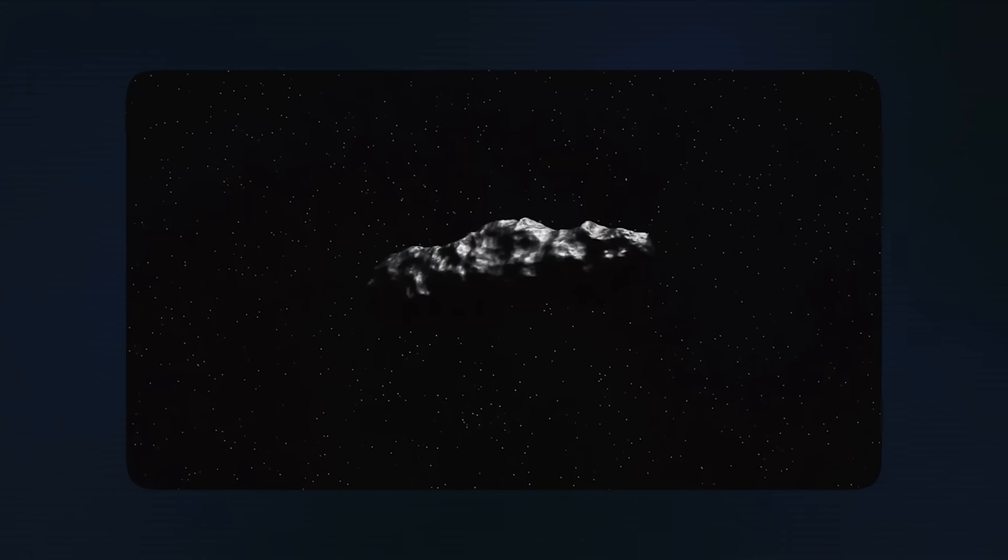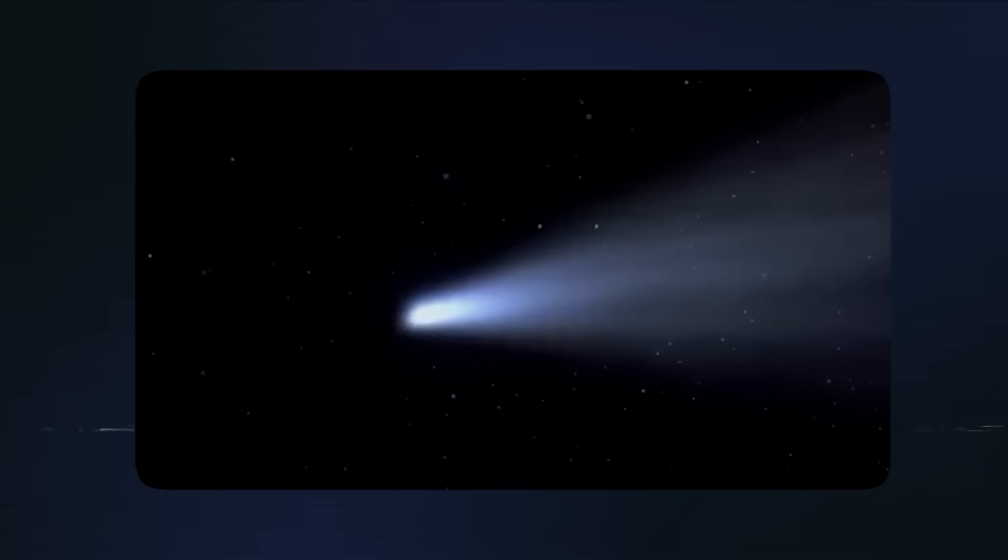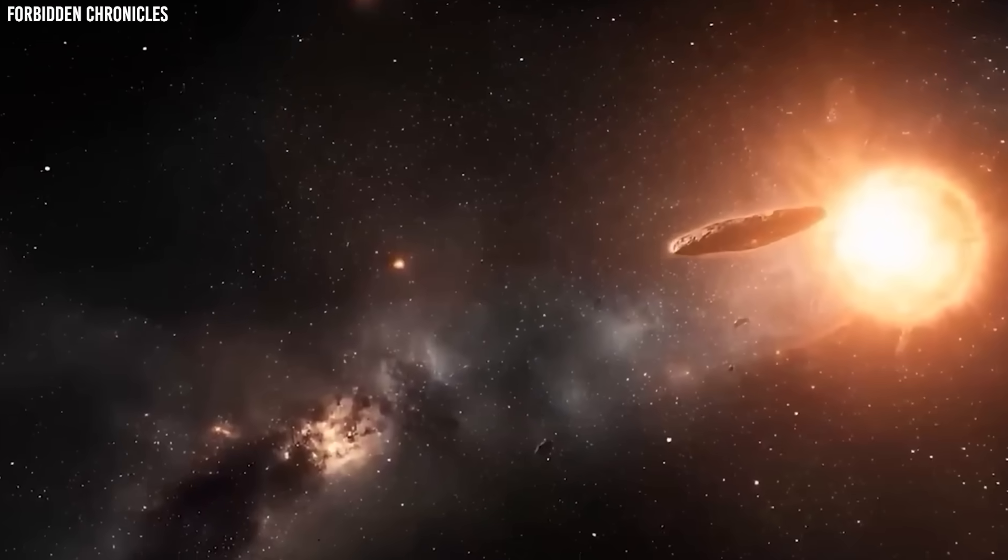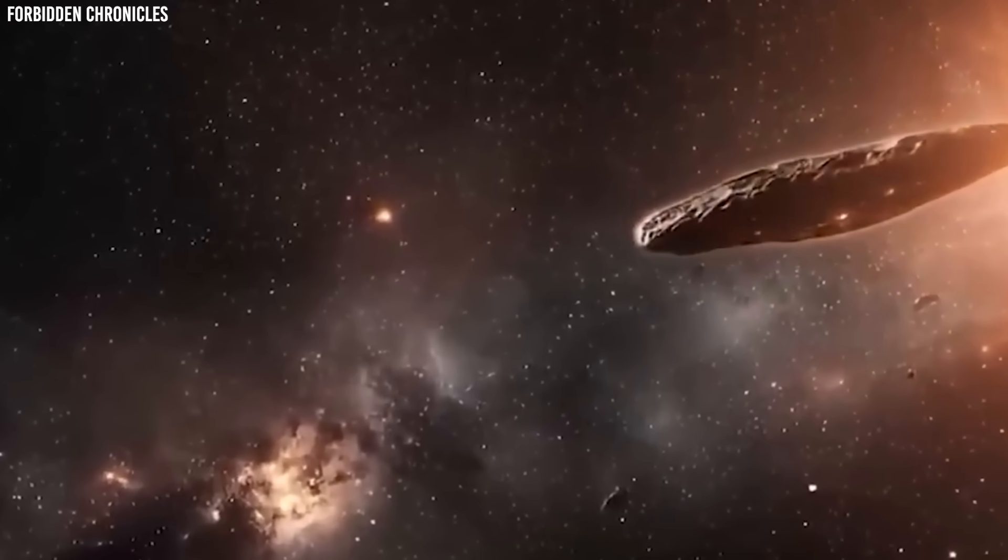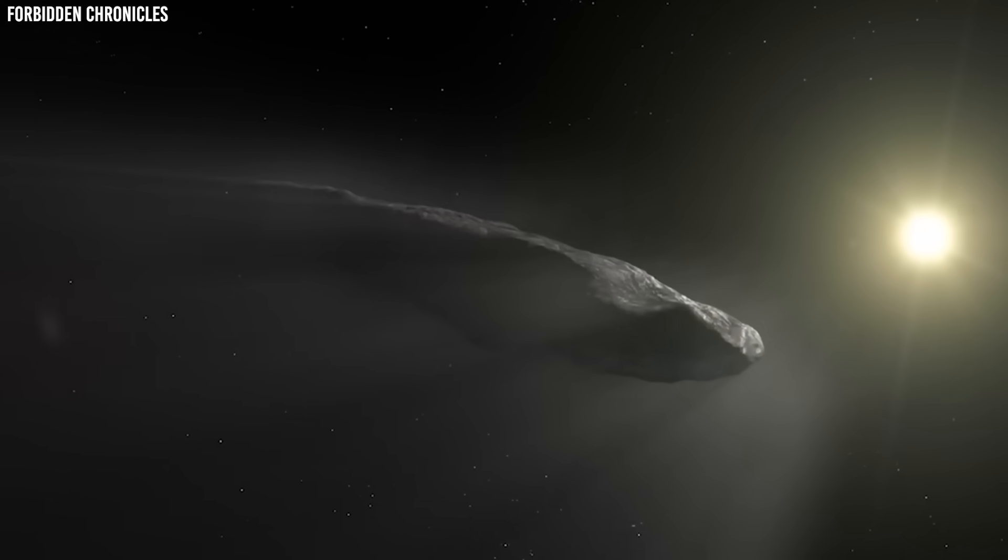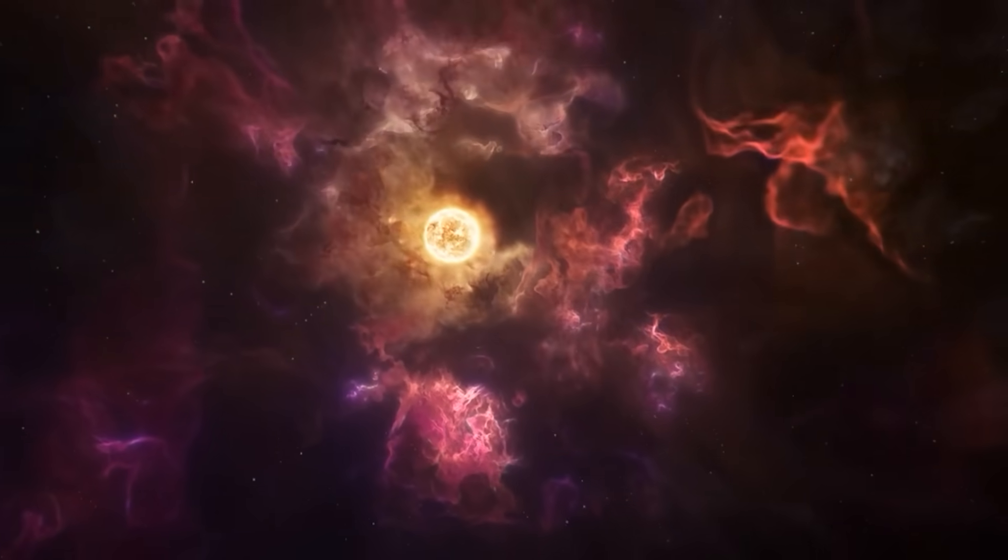The greenish color isn't just pretty, it tells us what SWAN is made of. When comets get close to the Sun, the ice inside them starts to evaporate, creating a cloud of gas and dust around the solid nucleus. Different chemicals glow different colors when they get hit by sunlight, just like a neon sign. The green color comes from carbon molecules that have been broken apart by the Sun's energy.